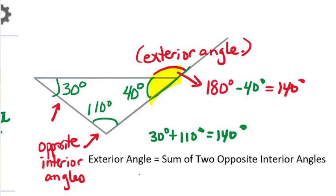It makes sense that it would be, because all three interior angles of the triangle must add up to 180. So 40 plus the other two angles has to add up to 180, just like 40 plus the exterior angle has to add up to 180. So whenever you work with an exterior angle of a triangle, remember that the exterior angle is the sum of the two opposite interior angles.